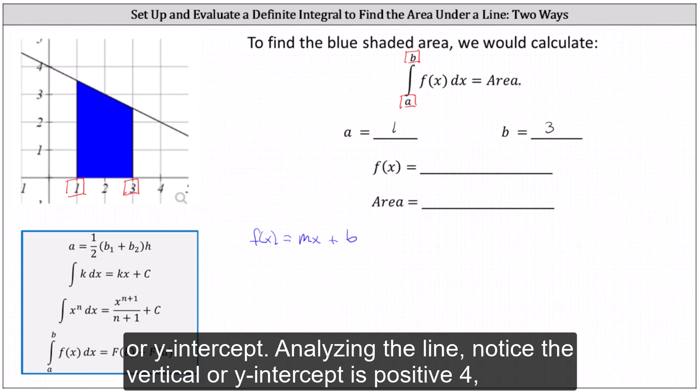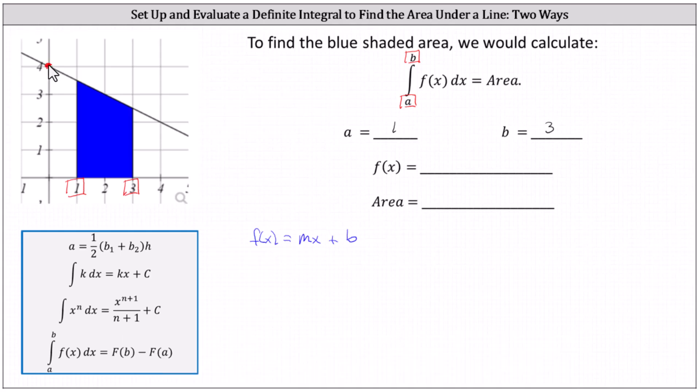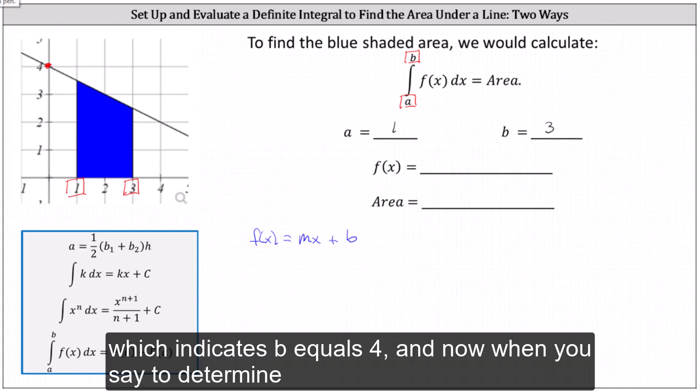Analyzing the line, notice the vertical or y-intercept is positive four, which indicates b equals four.